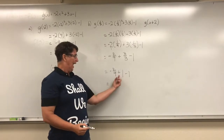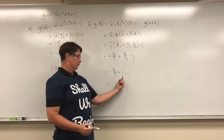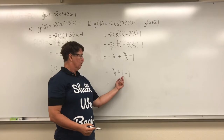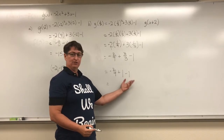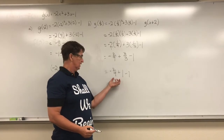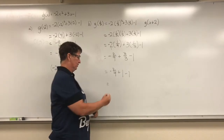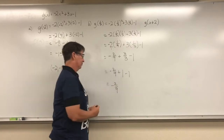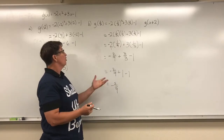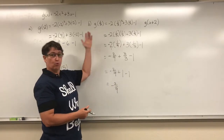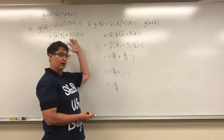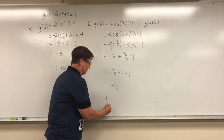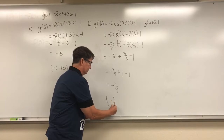Then when I add these together, the whole numbers add together: 1 minus 1 gives me 0. It just leaves me with negative 2 ninths. So we have found a point on the quadratic function at 1 third, negative 2 ninths.